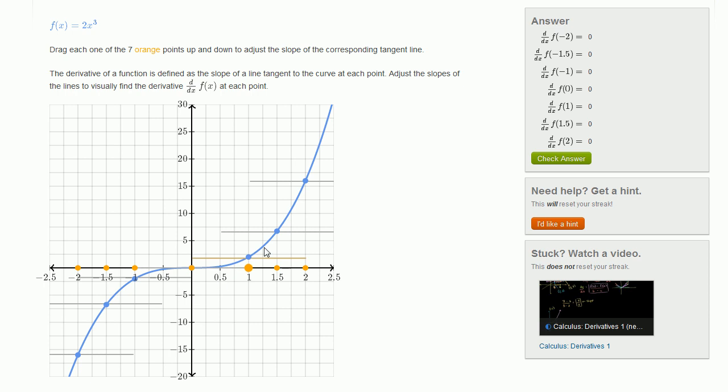So in this exercise right over here, they've graphed f(x) = 2x³. So this is 2x³ right over here. And what we need to do is move these orange dots up and down. So these orange dots right now show a line. When I highlight on that orange dot, you see this line down here became orange. And right now, that orange dot is 0 because the slope of this line right over here is 0.